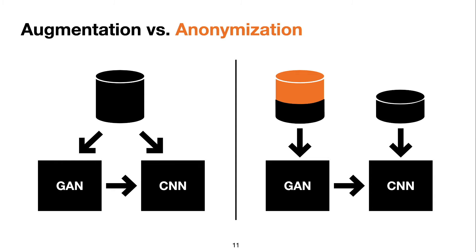In this work we consider two different ways of including the GAN in the traditional classification pipeline. The first one, on the left, is augmentation, where the objective is to improve performance of the classifier and the same dataset feeds both GAN and CNN. The second one, on the right, is what we call anonymization, where the GAN has access to exclusive data. Since this data never reaches whoever is training the classifier, it can be considered anonymized.